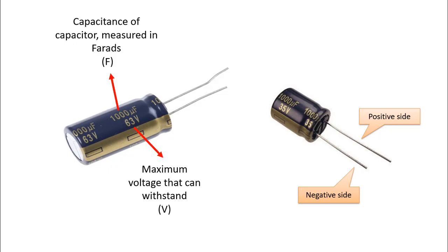The voltage value indicates the maximum voltage value that it can withstand. For example, the capacitor on the left is a capacitor that can withstand 1000 microfarads and a voltage of 63 volts. The capacitor on the right is a capacitor that can withstand 1000 microfarads and a maximum voltage of 35 volts.